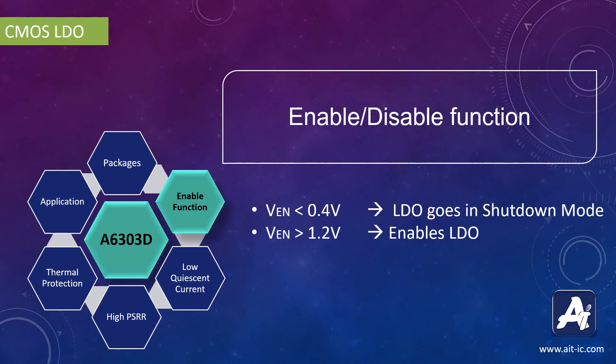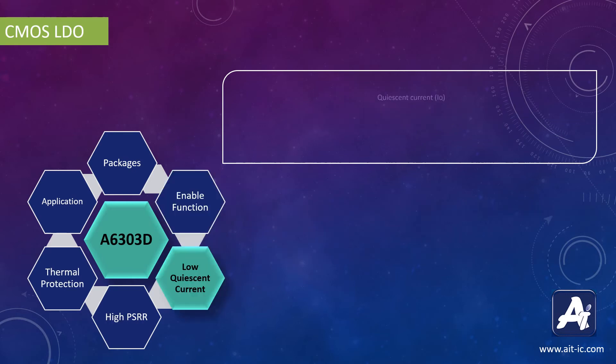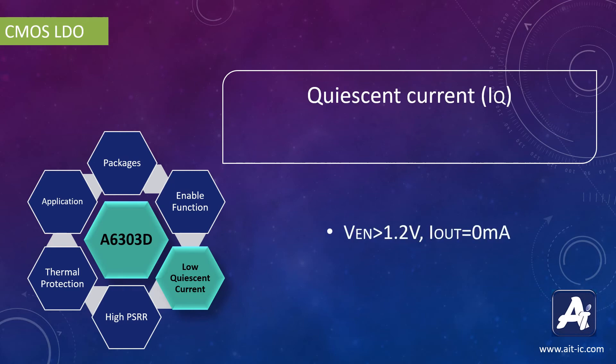In shutdown mode, it consumes very little current — just 0.1μA. This IC also has a very low quiescent current. When the device is in an enabled state but no load is connected, the typical quiescent current is just 45μA.